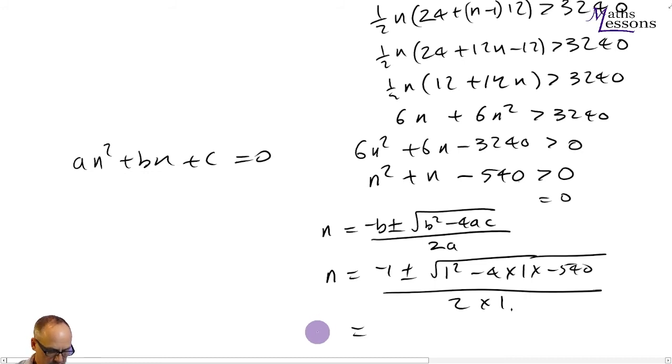And when we put that into our calculator, we get two values out. We get one value from when we add it. When we add it, we get 22.74 as our answer. And when we subtract it, we're going to get minus 23.74 as our answer. Now n can't be negative, so it's got to be positive. This tells us when it equals 0. So when it's greater than 0, the first value of n, remember n's going to be a whole number, because you can't have 0.2 or 3 terms, you could have a whole number of terms. So the first whole number where this will occur will be when n is 23.